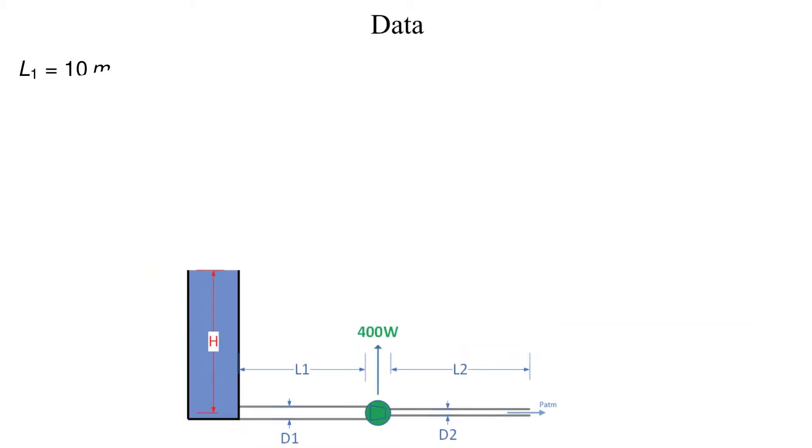The lengths and diameters for both the inlet pipe to the turbine, pipe 1, and the outlet pipe, pipe 2, are given. Both pipes are cast iron with a roughness of 0.046 millimeters. The relative roughness for both pipes are calculated and provided here.